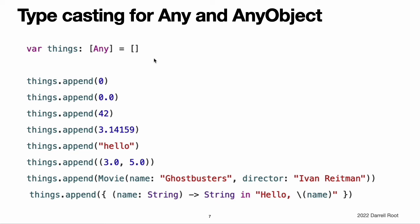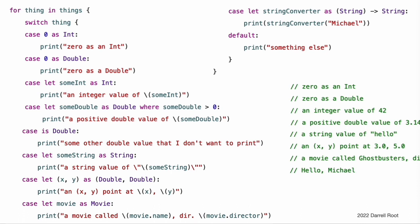Here is an example of using Any to work with a mix of different types, including function types and non-class types. The example creates an array called things, which can store values of type Any. The things array contains two Int values, two Double values, a String value, a tuple of type (Double, Double), the Movie Ghostbusters, and a closure expression that takes a String value and returns another String value. To discover the specific type of a constant or variable that is known only to be of type Any or AnyObject, you can use an IS or AS pattern in a switch statement's cases. This example iterates over the items in the things array and queries the type of each item with a switch statement. Several of the switch statement's cases bind their matched value to a constant of the specified type to enable its value to be printed.